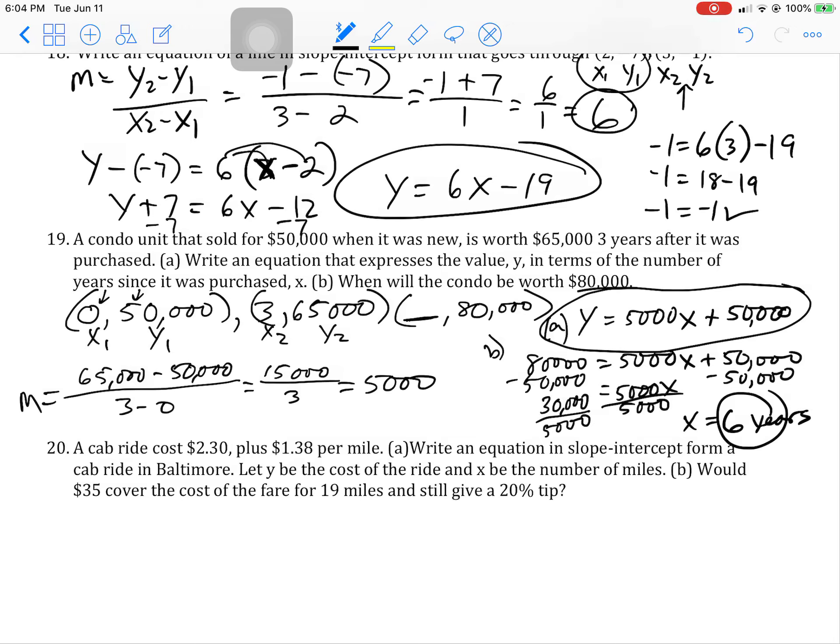All right, the last one. The cost of the ride is $2.30 plus $1.38 per mile, write an equation in slope intercept form. So the cab cost, the cost of the ride, let Y be the cost of the ride, X be the number of miles. So 1.38 times the number of miles, per mile. That's the slope or the rate, and it's going to start at $2.30 if you don't go anywhere. So that's the answer to A.